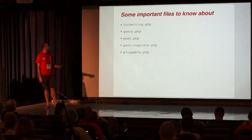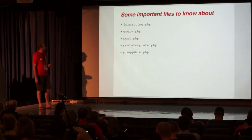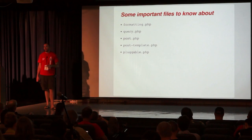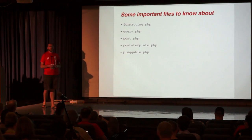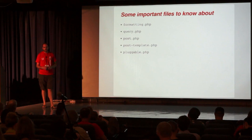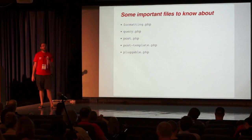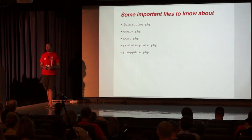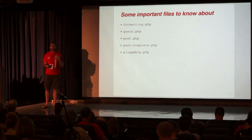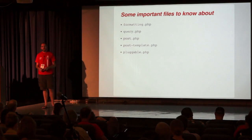Getting into specific files — these are five that you'll probably interact with on a pretty regular basis. formatting.php has a lot of really neat functions for sanitizing and escaping data, doing different formatting. This is something you use after you've taken data in from a form that you want to save in the database, or you're outputting some data to the end user through a theme or a plugin. query.php has everything related to querying the database for posts. When you hit the home page of your site or go to a single post, wp-query is what actually goes to the database and gets those posts.